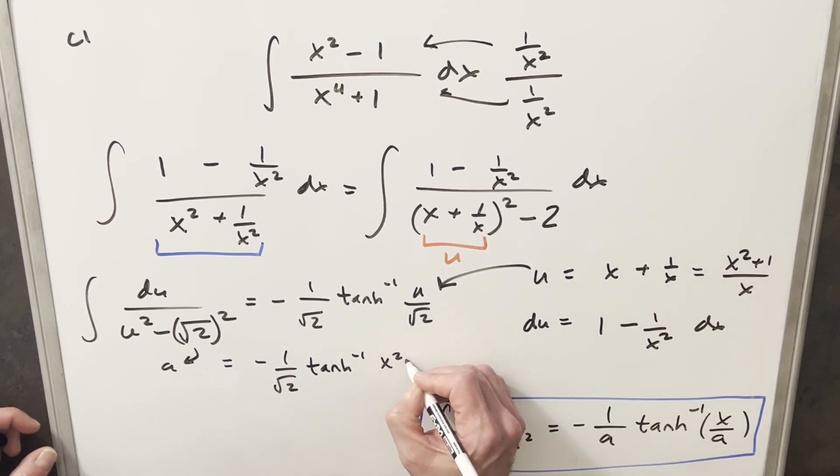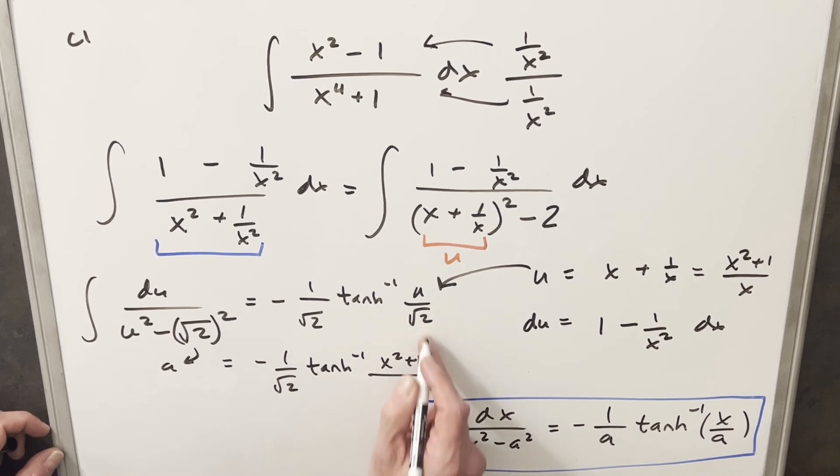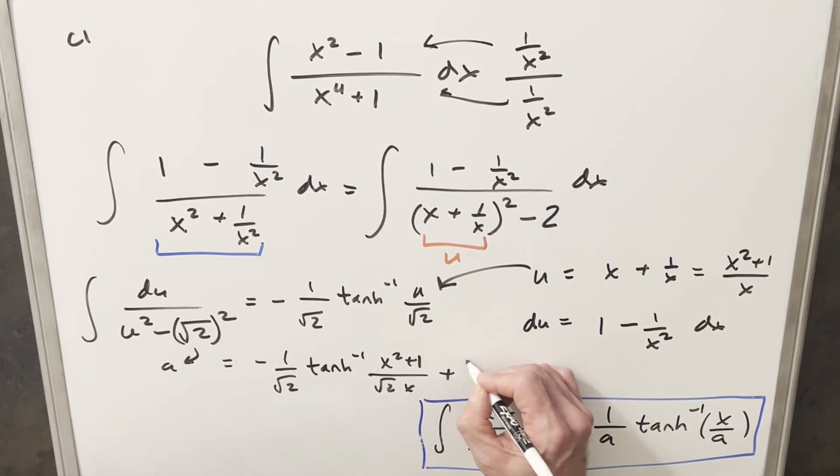Then we'll have this thing. x squared plus 1 over, combine the square root of 2, x plus c.